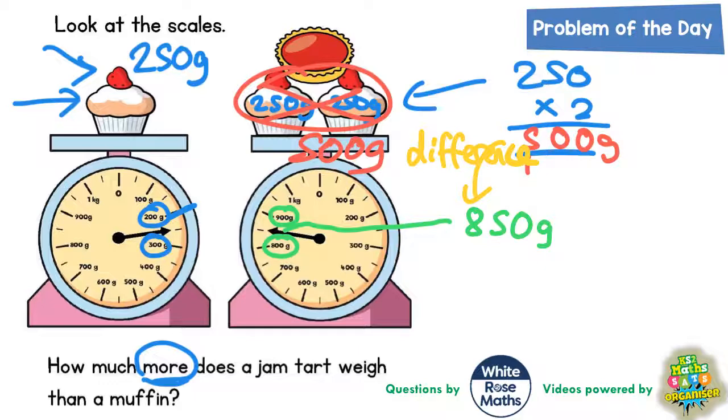So what we need to do is find the difference. So if you take the 850 and subtract the 500, you are going to get zero take away zero is zero, five take away zero is five, eight take away five is three. So the difference between them is 350 grams, and that therefore must be the weight of the jam tart.